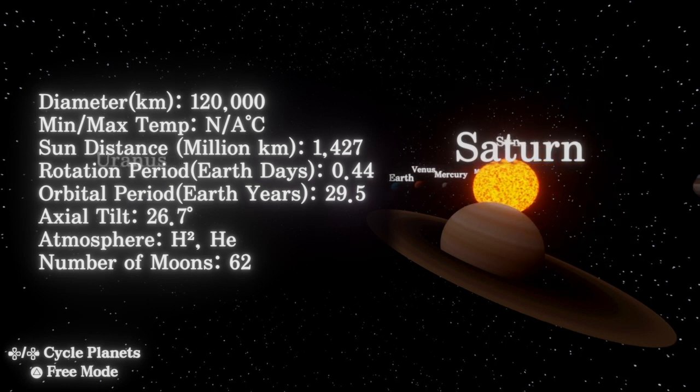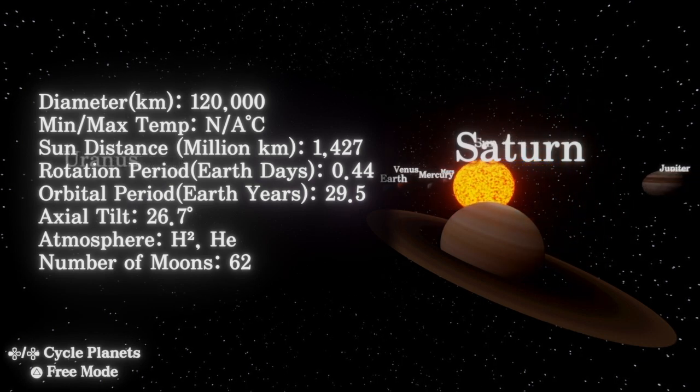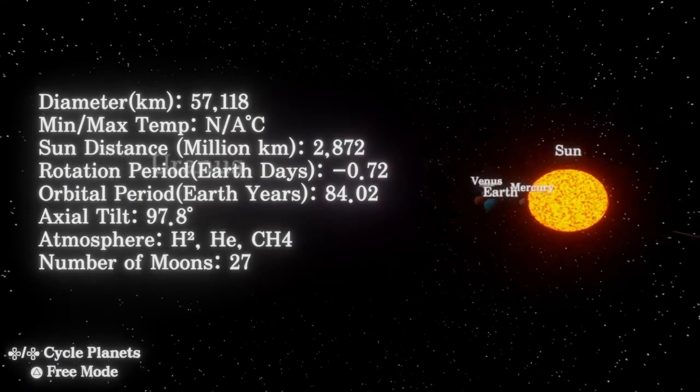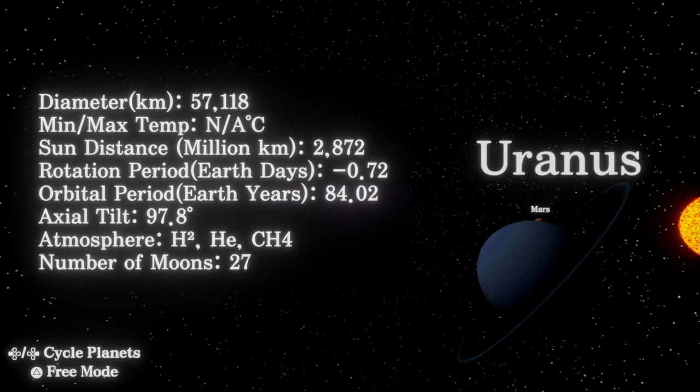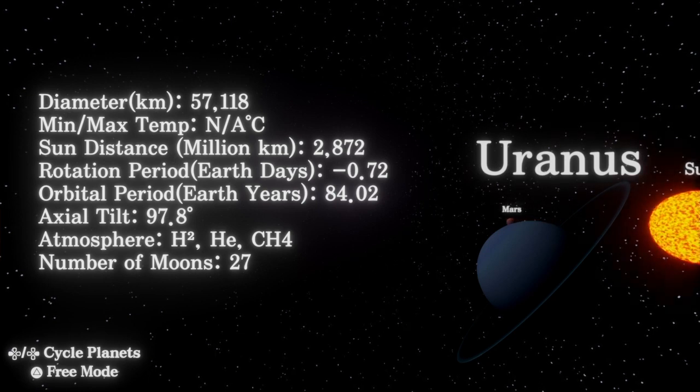Uranus: the axis of this planet is unique in that it tilts nearly sideways. This means that its poles are where the equator is for most planets.